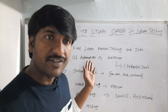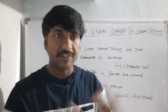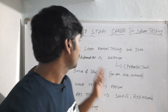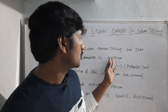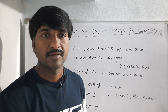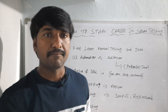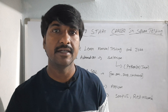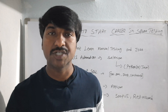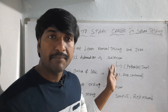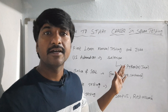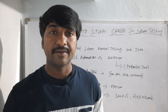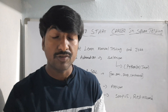For UI automation — UI means user interface — whatever interface is available, you have to automate that application. The most popular automation tool is Selenium. There are a number of automation tools in the IT market, but the most popular one is Selenium. Before learning Selenium, you have to learn one programming language, because to automate a web application you have to write test scripts.